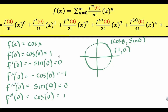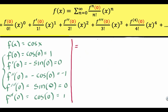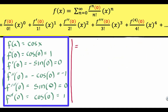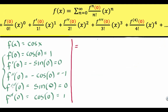Notice that the cycle repeats every four terms: you have 1, 0, negative 1, 0, and then 1, 0, negative 1, 0 again. Using now the Maclaurin series expansion formula with these values for f of 0, f prime of 0, f double prime of 0, and so on, we now have the following result.